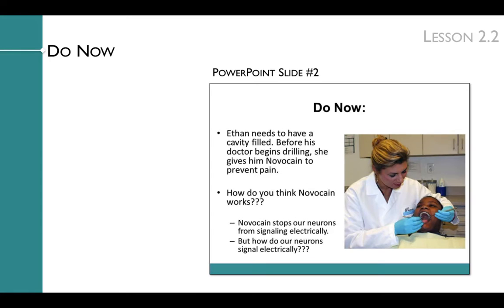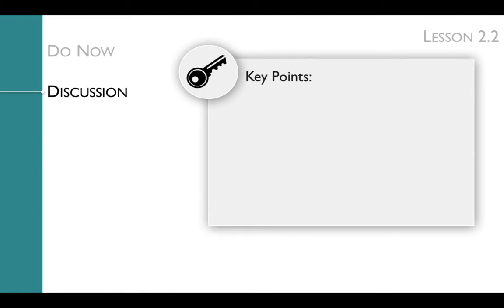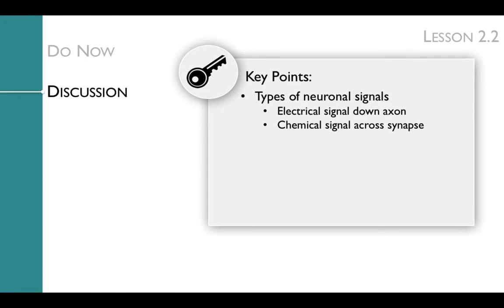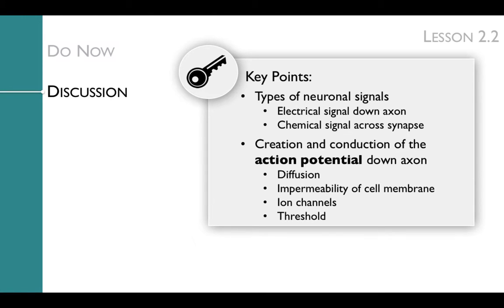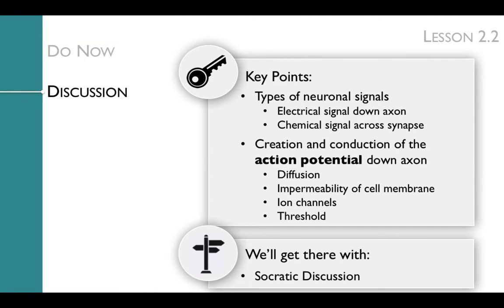After allowing students time to brainstorm and share their ideas, you'll animate slide two to show students that Novocaine stops our neurons from signaling electrically, which will lead directly into the discussion. The key points of the discussion are to introduce types of neuronal signals — including the electrical signal down the axon and the chemical signal across the synapse — and to discuss the creation and conduction of the action potential, covering diffusion, impermeability of the cell membrane, ion channels, and threshold.